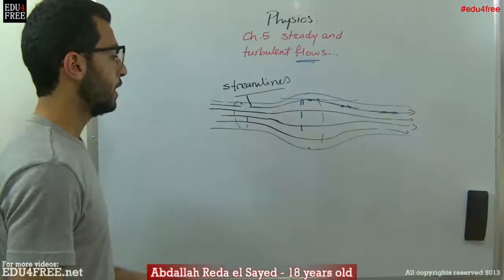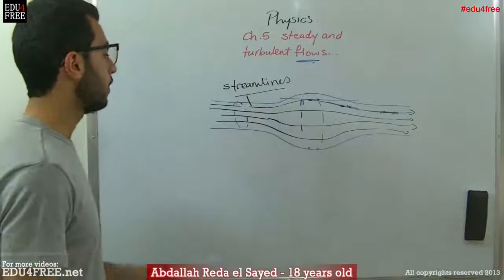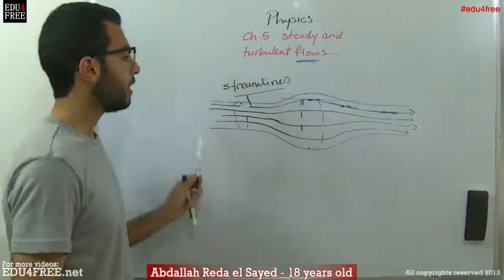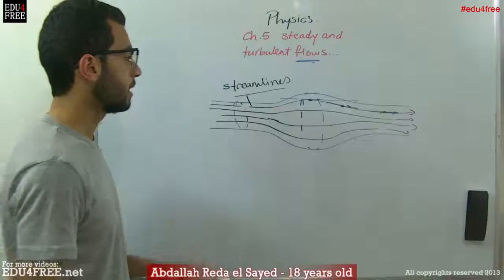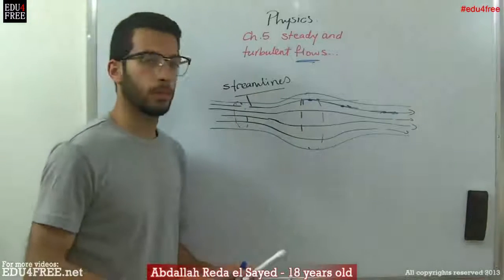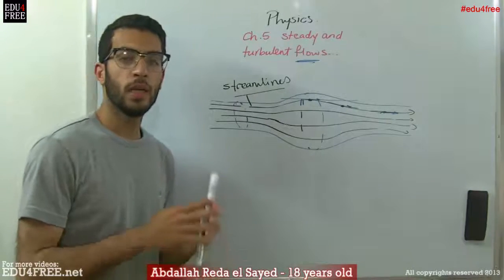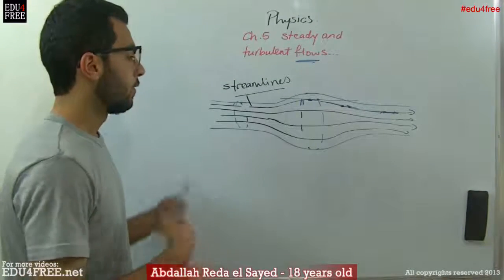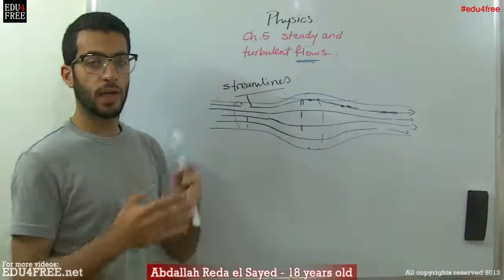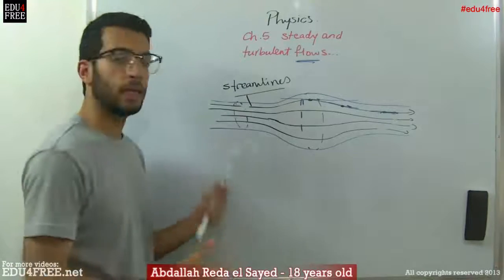What are the conditions for a flow to be called a steady flow? First, the rate of flow is constant along its path because the liquid is incompressible. This means we cannot compress the liquid into a volume smaller than its original volume — for example, I cannot compress one cubic meter of water into half a cubic meter.